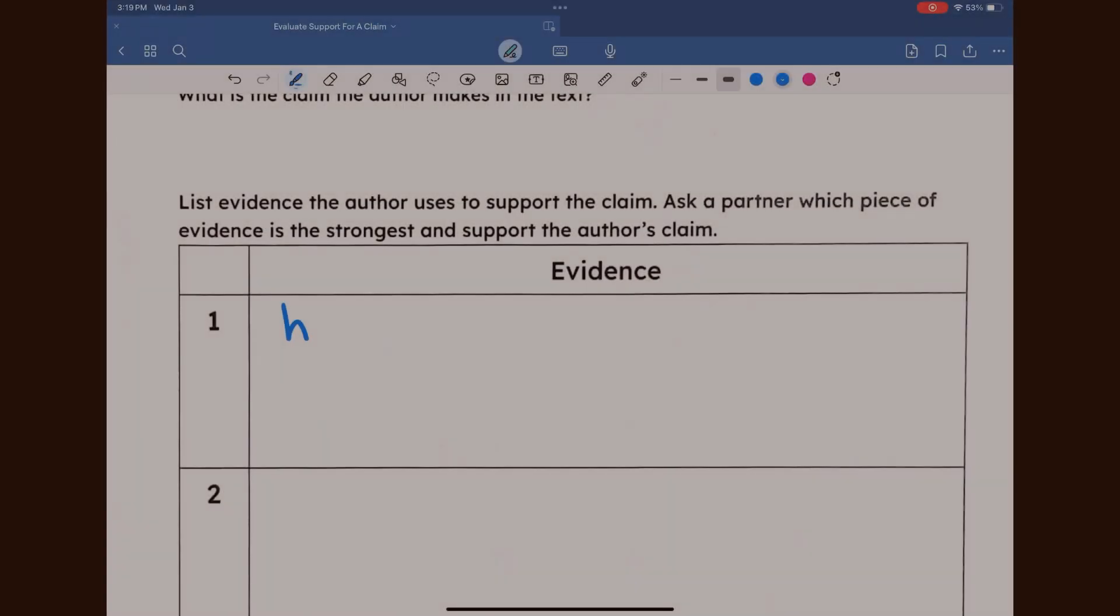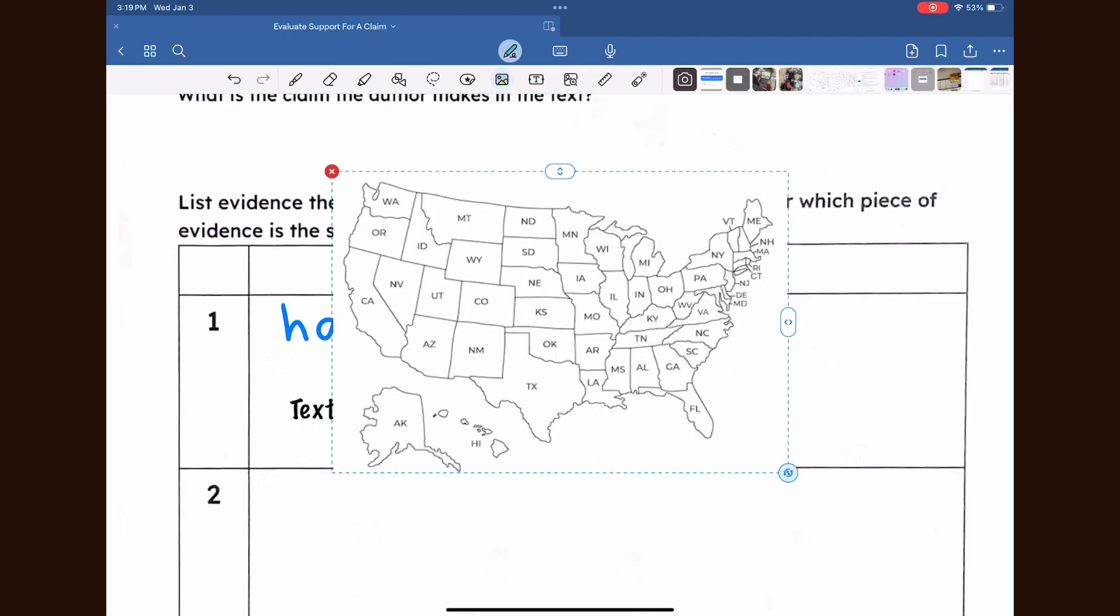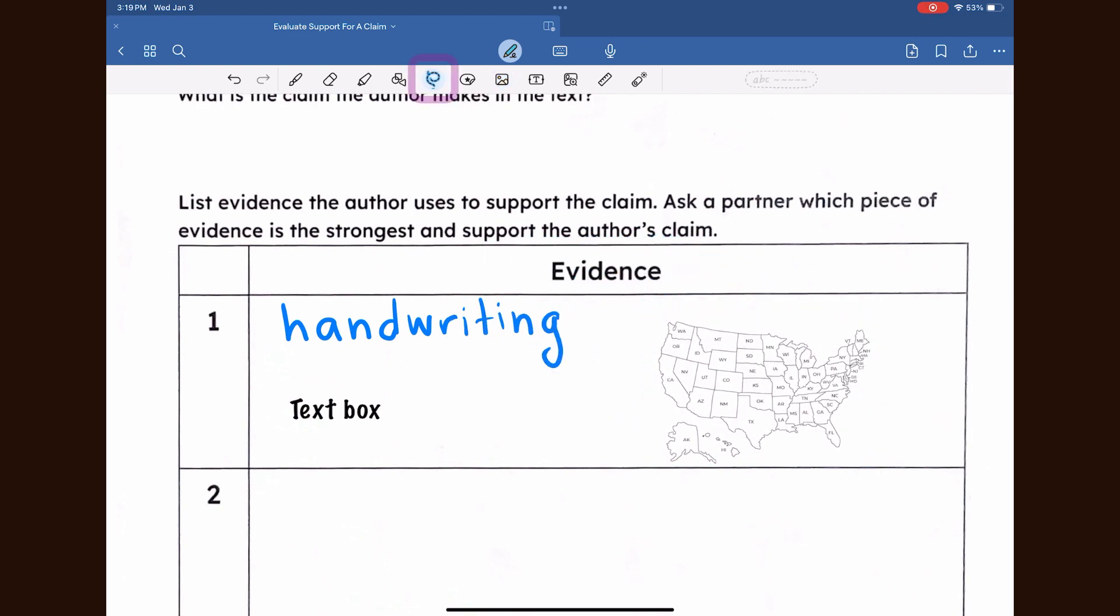To demonstrate, I'm going to add three objects. Using the pen, I'll write handwriting, then create a text box, and last, add an image.